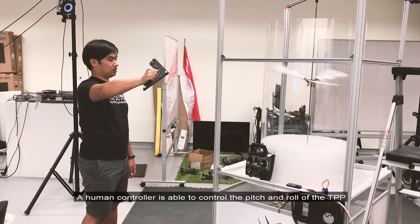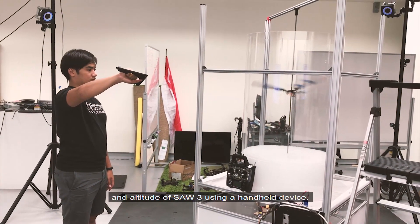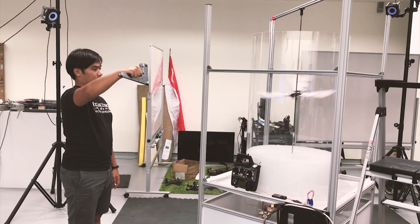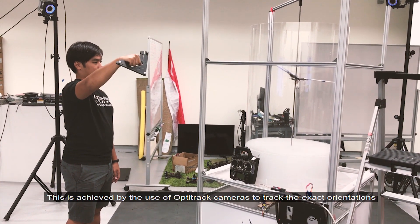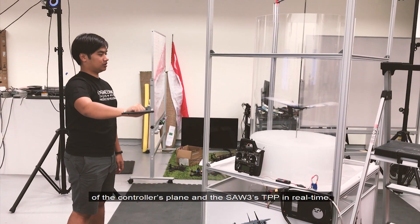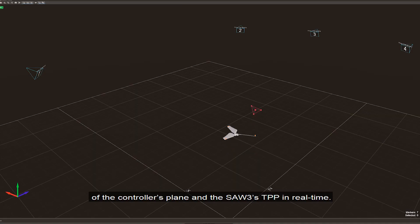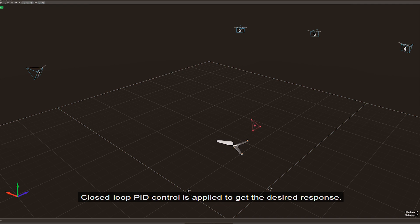A human controller is able to control the pitch and roll of the TPP and altitude of SOAR 3 using a handheld device. This is achieved by the use of OptiTrack cameras to track the exact orientations of the controller's plane and the SOAR 3's TPP in real time. Closed loop PID control is applied to get the desired response.